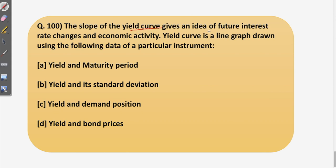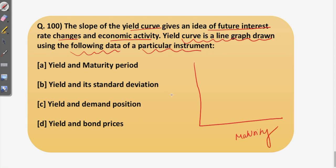The next question says: the slope of the yield curve gives an idea of future interest rate changes and economic activity. The yield curve is a line graph drawn with maturity period on one axis and yield on the other. Normally, the yield curve slopes upwards — this is the normal yield curve — meaning short-term maturity securities provide less yield than long-term maturity securities. This is logical because longer maturity means greater risk, requiring a higher yield to offset that risk. There can also be an inverted or flat yield curve.